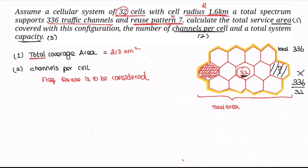Frequency reuse is to be considered. The reuse pattern is 7, so we divide the total channels by the cluster size. We substitute 336 divided by 7, giving 48 channels per cell.